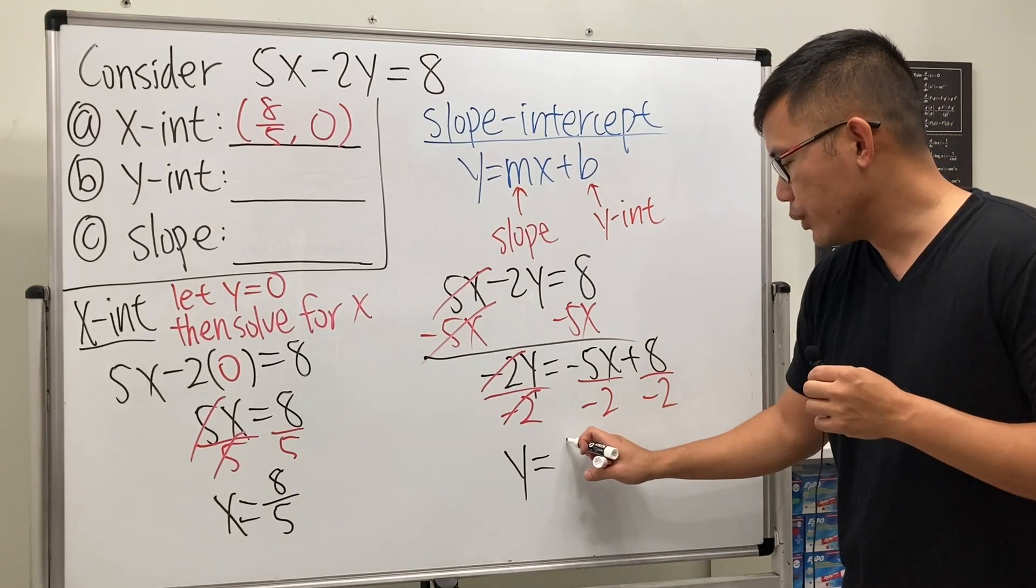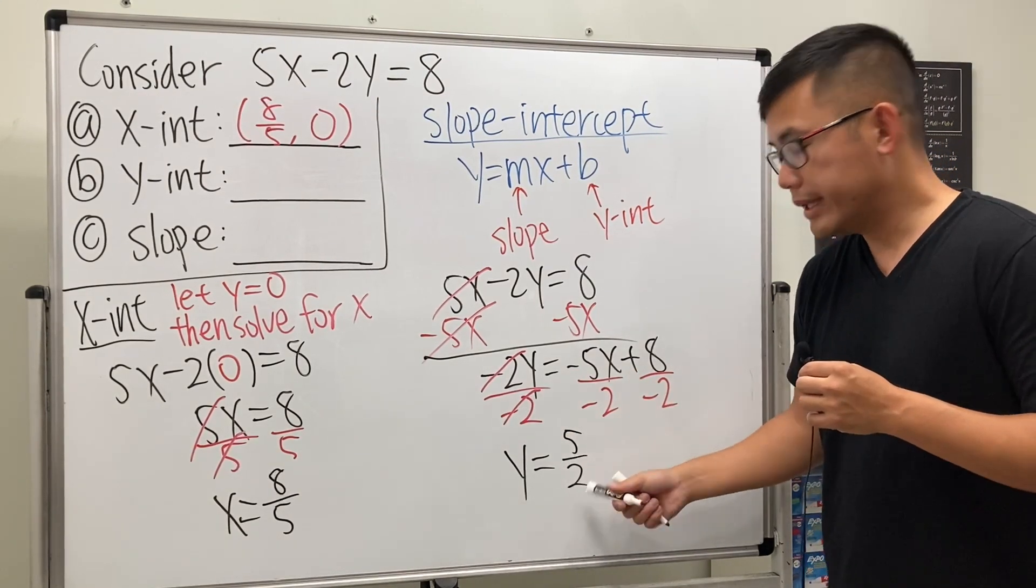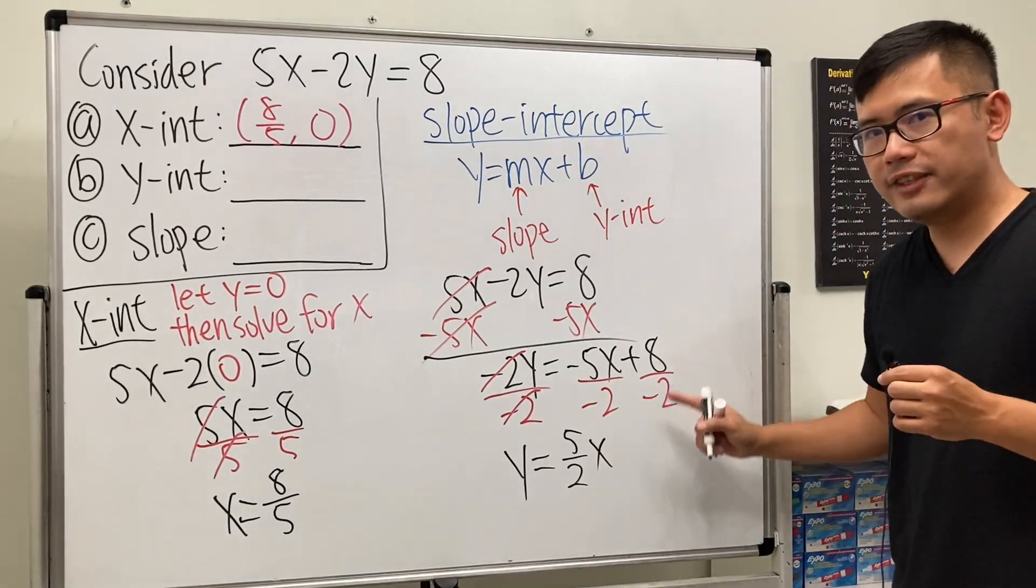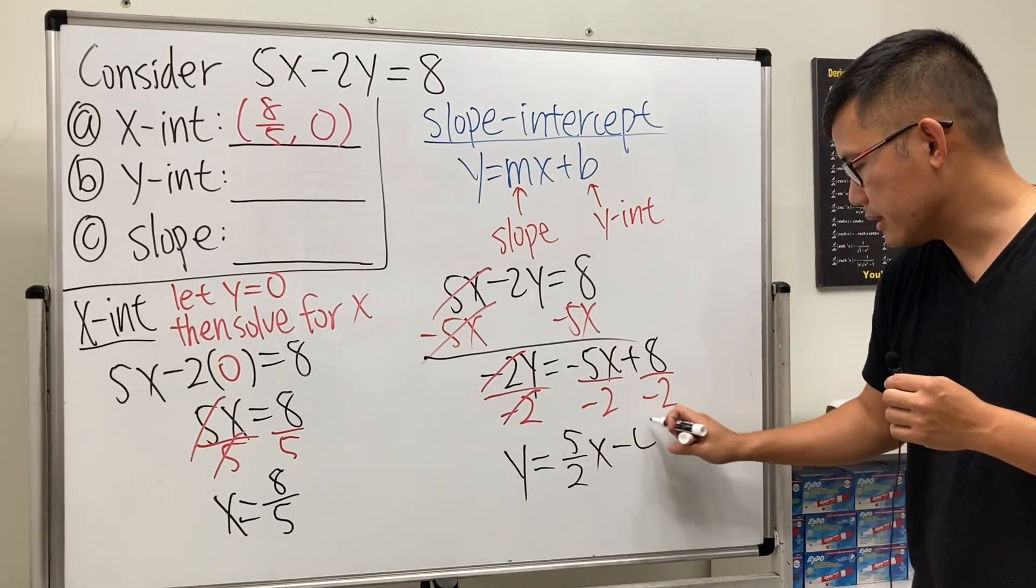Negative 5 divided by -2 gives us positive 5/2, so we write (5/2)x, and 8 divided by -2 gives us -4. So y = (5/2)x - 4.